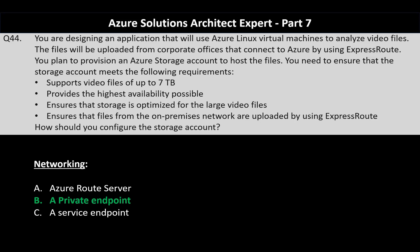Let's understand why the other options are incorrect. Azure Route Server is primarily designed to facilitate dynamic routing between virtual network appliances and virtual networks, making integration easier for network virtual appliances such as firewalls or routers using the border gateway protocol. Service endpoints extend your VNet's private address space to Azure services over Microsoft's backbone, providing secure access, but do not guarantee integration with ExpressRoute — they will route traffic over the internet unless a specific ExpressRoute integration is defined.